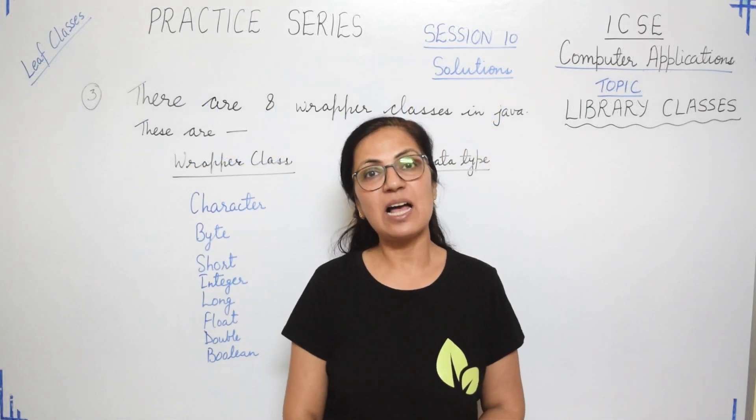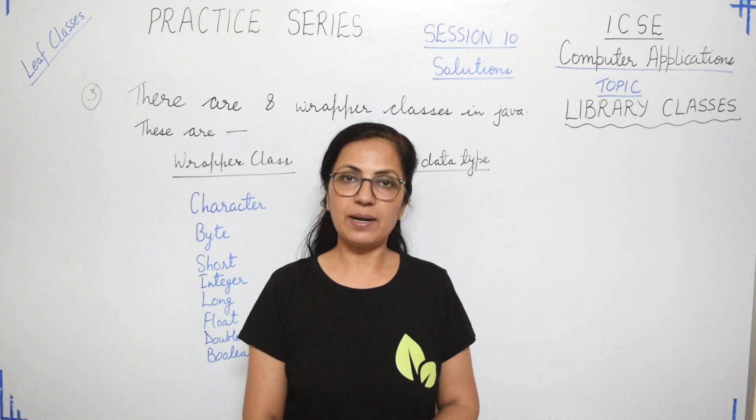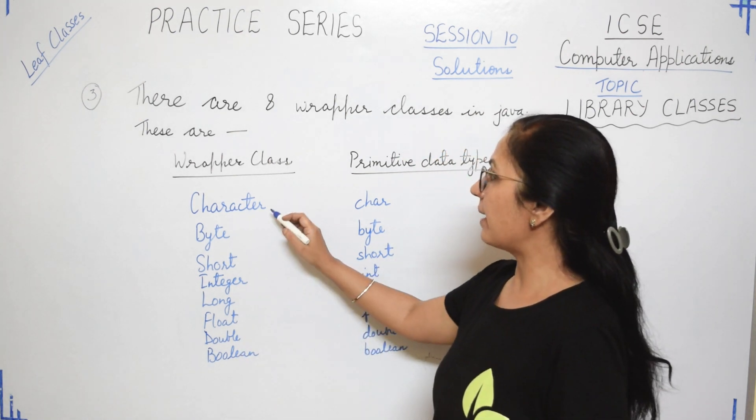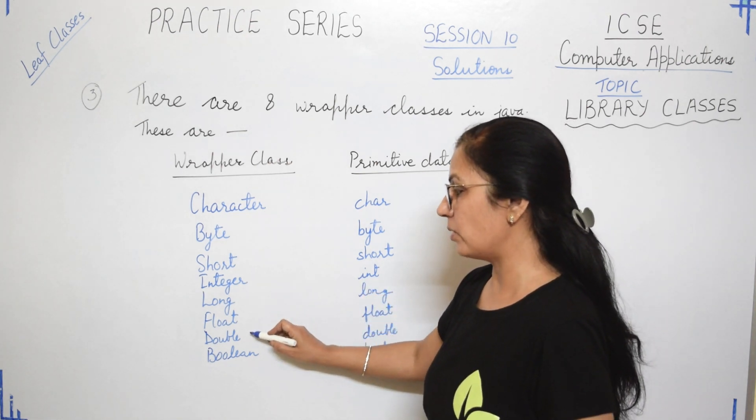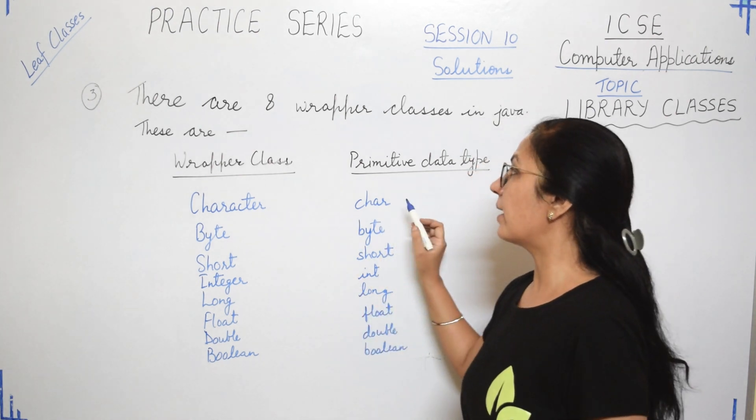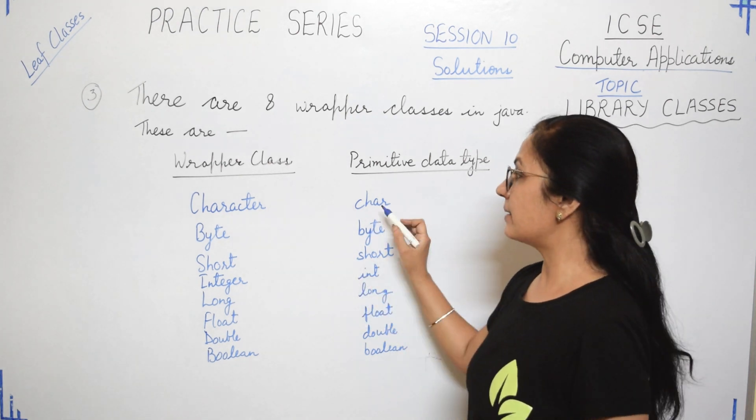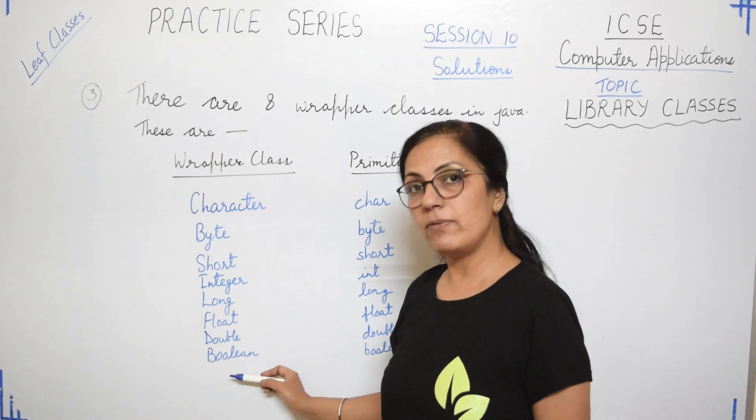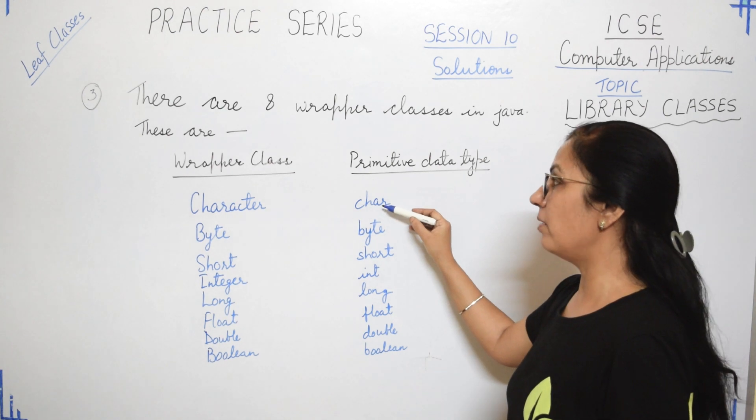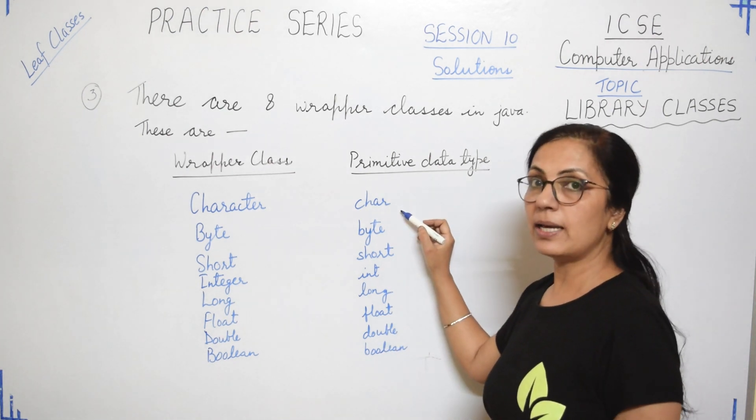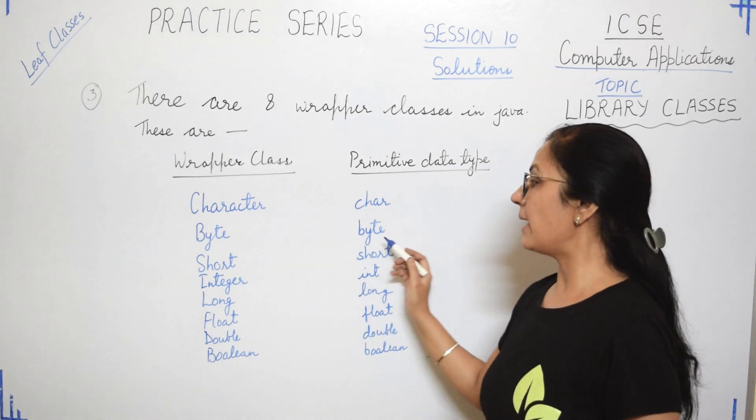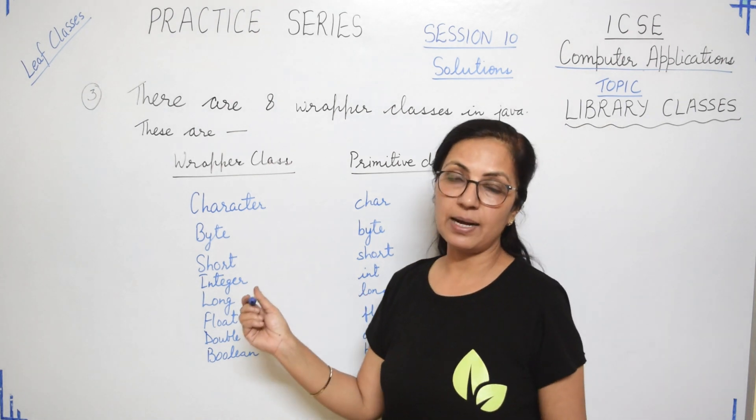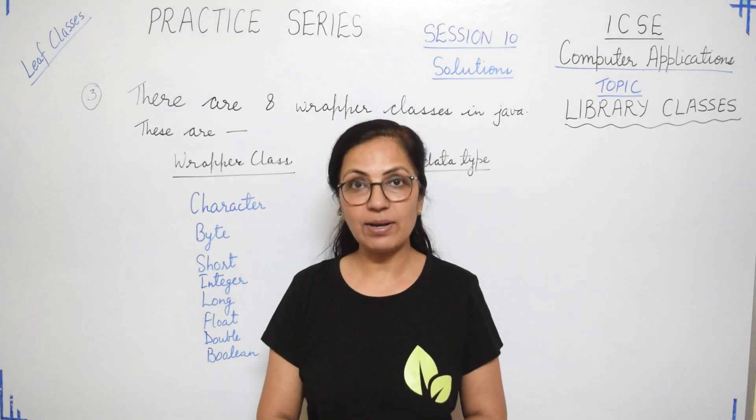Question number three says: how many wrapper classes are there in Java and name these wrapper classes along with the primitive data types. So we have total eight wrapper classes present in Java and these are the wrapper classes: Character, Byte, Short, Integer, Long, Float, Double, and Boolean. And for each wrapper class you have the corresponding primitive data type. For Character it is char. One thing I would like to tell you is that wrapper class starts with the capital letter, with uppercase letter always, whereas the primitive data type names are always written in lowercase. So for Character it is char, Byte, Short, int, long, float, double, and boolean. I hope this is very simple and all of you must have done it correctly.